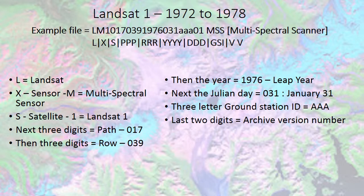Landsat 1 was active from 1972 to 1978. It had a multi-spectral scanner. You can get some basic information about the path and the row. This particular example was a leap year, so the Julian date reflects that.